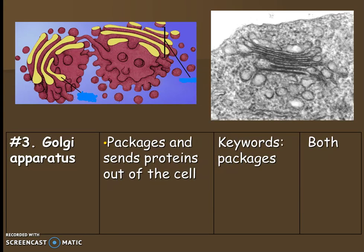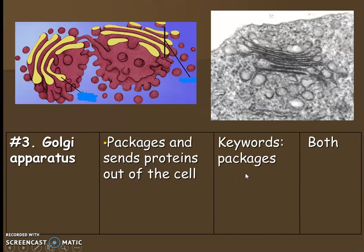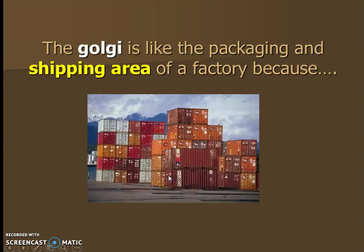Next is the Golgi apparatus — this one is usually quite new. The Golgi apparatus is in charge of packaging and can also send proteins out of the cell. It looks like stacked bread, like pita bread. The keyword to highlight is 'packages,' and those packages are the little bubbles coming off of it. It is found in both plants and animals. In the factory analogy, the Golgi apparatus is like the shipping area, because that's where things get packaged and sent out.